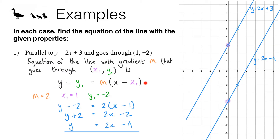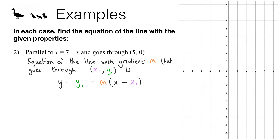So once you know this formula it's only really three lines of working. For question 2, we're looking for a line parallel to y equals 7 minus x that goes through the point (5, 0). We can use the formula, and first we observe that the gradient is negative 1 — there's an invisible 1 there, so 7 minus x is the same as 7 minus 1x, giving gradient m equals negative 1. Our x1 is 5 and y1 is 0.